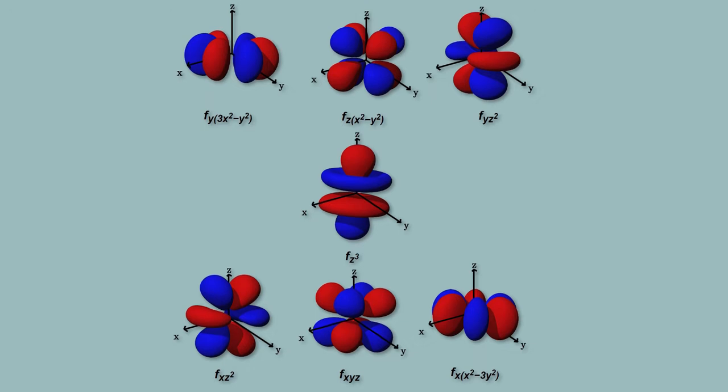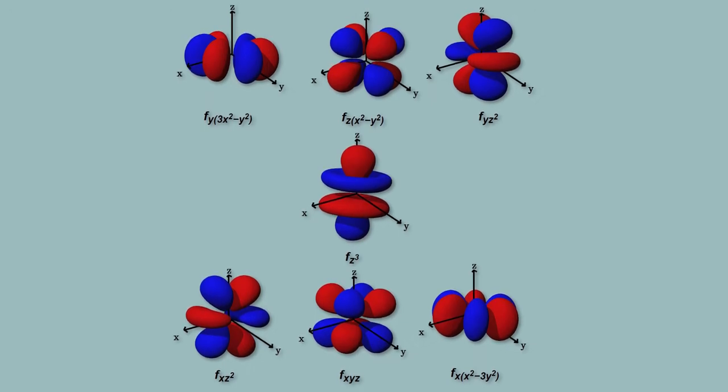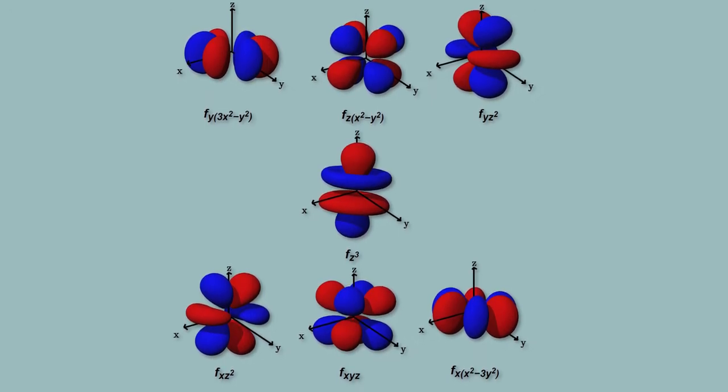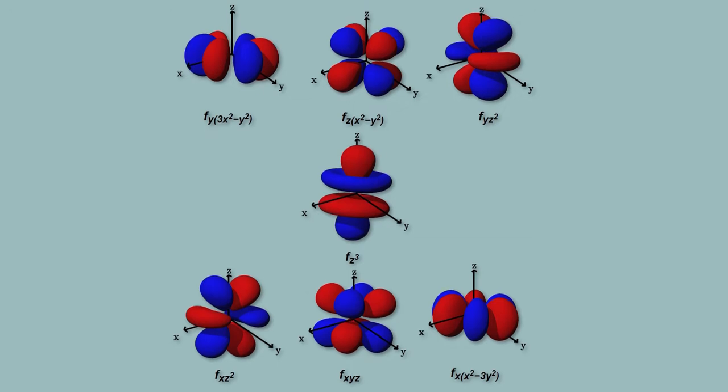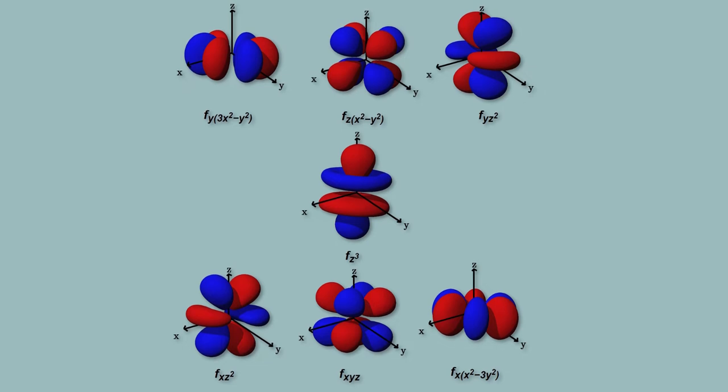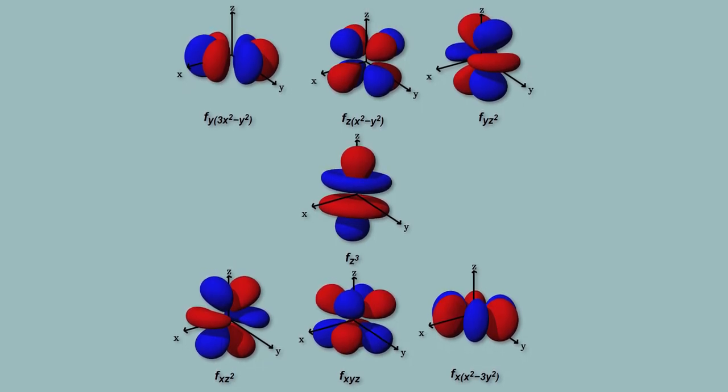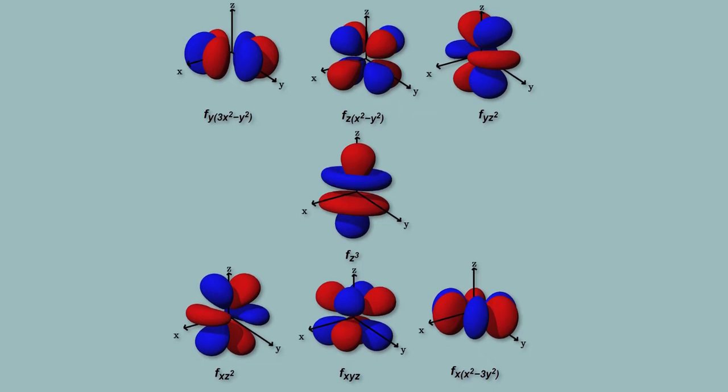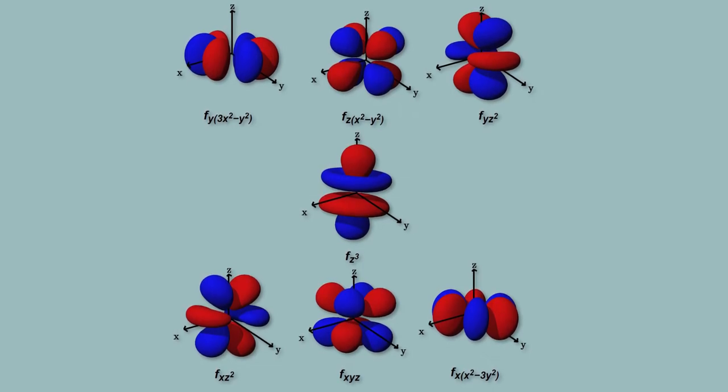According to the Schrödinger equation, electrons aren't particles, but oscillations in a spherical membrane. Obviously, an electron, when located or isolated, is a particle. But in this new model, perhaps they aren't particles. Instead, they're waves, until an experiment condenses the wave into a particle.